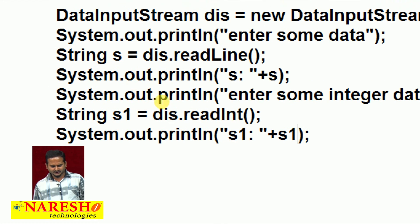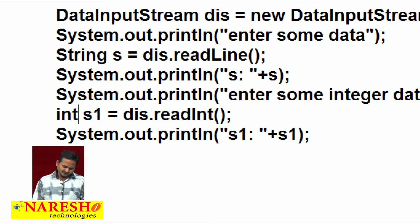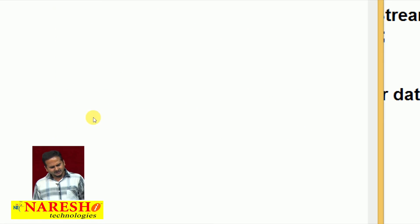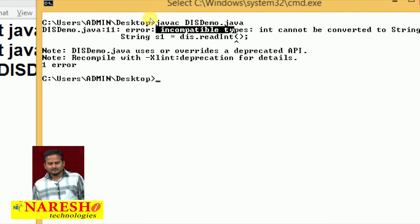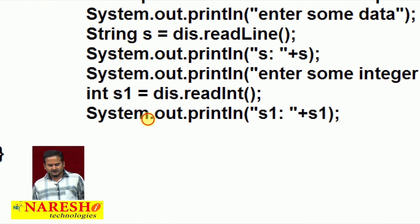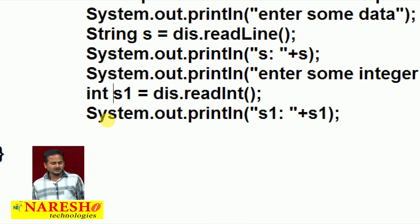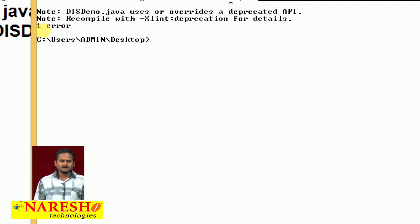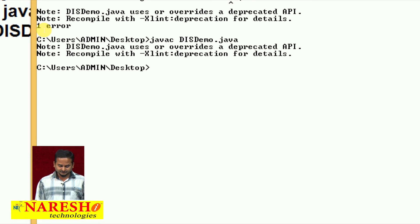There is a little bit of a mistake — I am reading the data in the format of int but placing it into a String variable. The proper error message is: incompatible types, int cannot be converted to String. With the help of the readInt method, we read the data in integer format, but it was placed into String. Now I changed it to int s1. There is no problem. Let me compile again — successfully compiled.